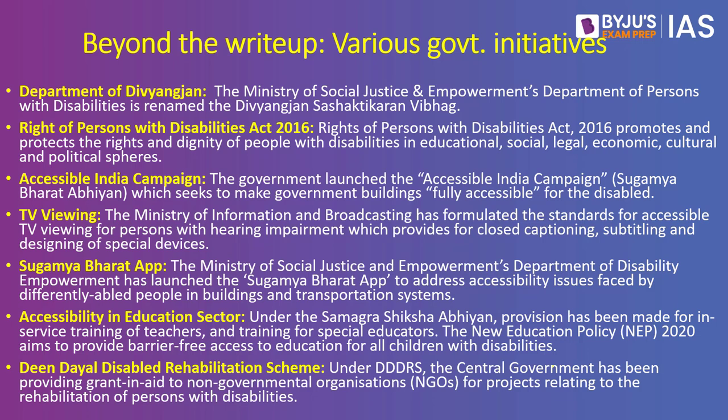The government has launched several initiatives for people with disabilities. For example, the Ministry of Social Justice and Empowerment's department, earlier called Persons with Disability, is now renamed as Divyanjan Sashaktikaran Vibhag. The Rights of Persons with Disabilities Act of 2016 promotes rights and dignity of disabled people across education, social, legal, economic, and political spheres. The government is also giving special attention to making government buildings fully accessible — providing separate washrooms and entry ramps for wheelchair users.